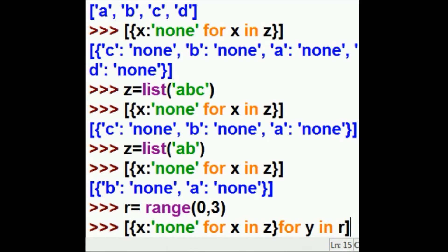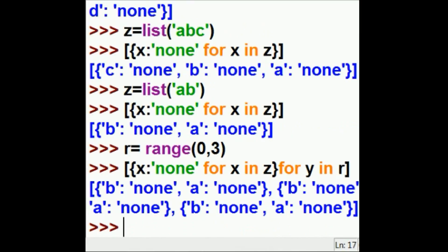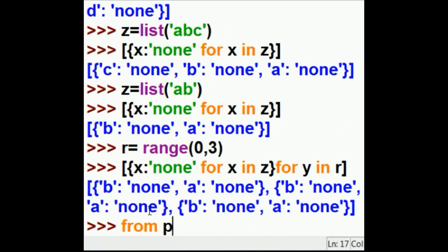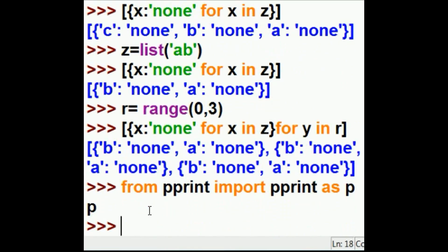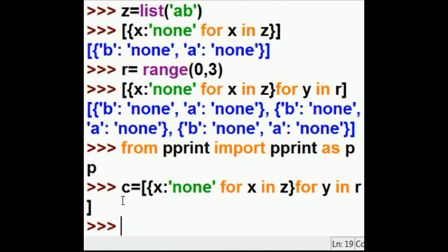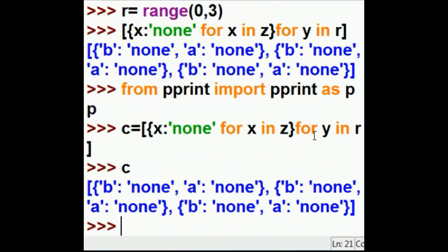All right, let's see what happens now. Oh, ugly, very ugly. I have to fix this. From pprint, import pprint as pp. I'll key in the same thing again, but this time I'll be a little smarter. I'll send this to a variable C. C equals that. Now, if I key in C, it's going to look very ugly.